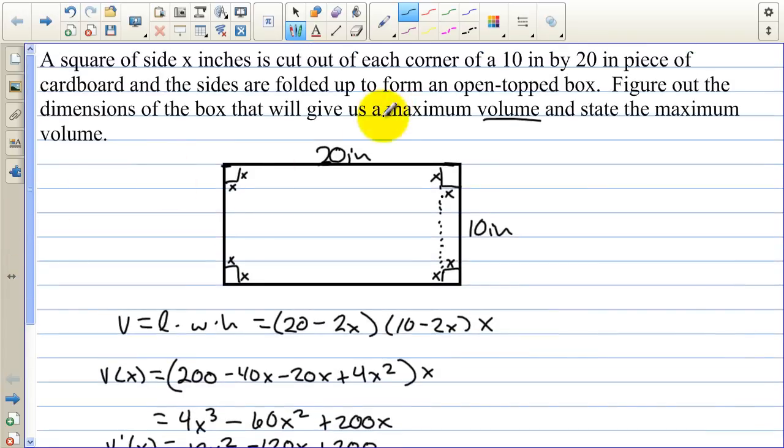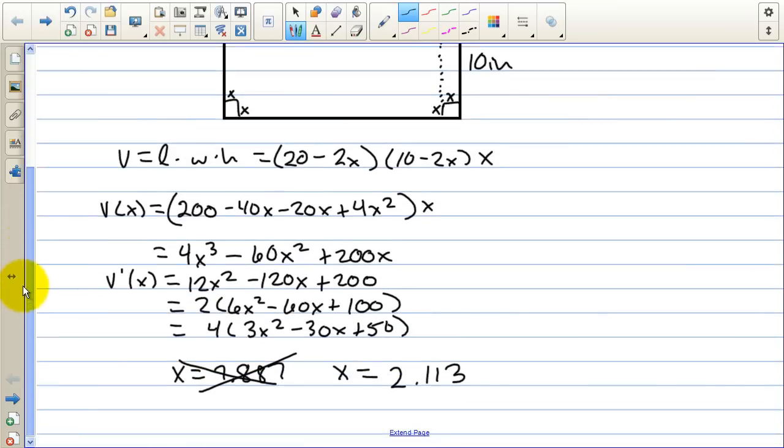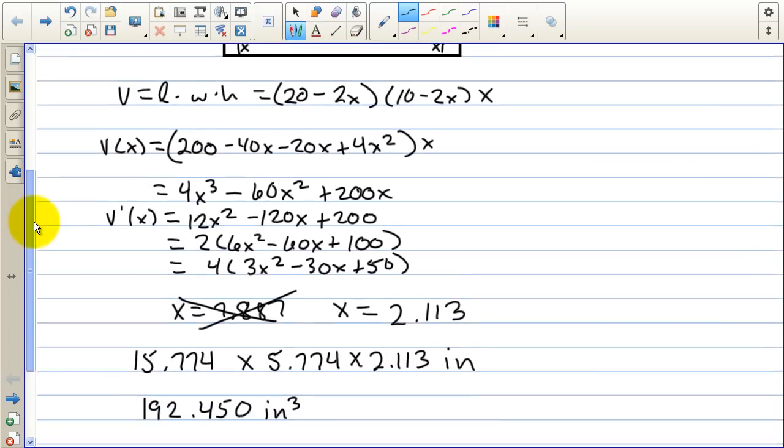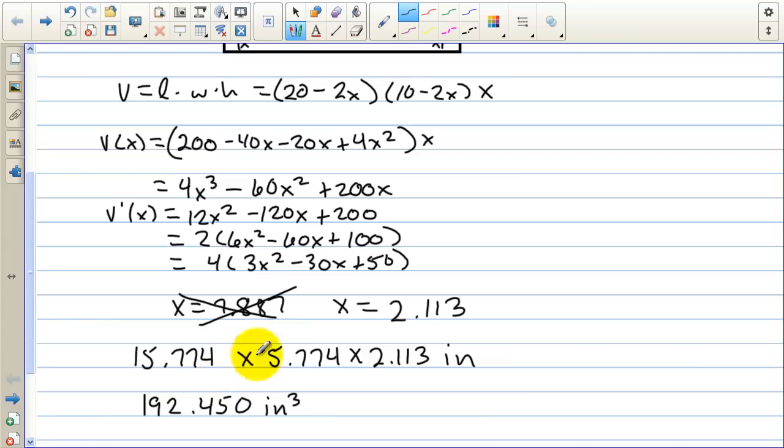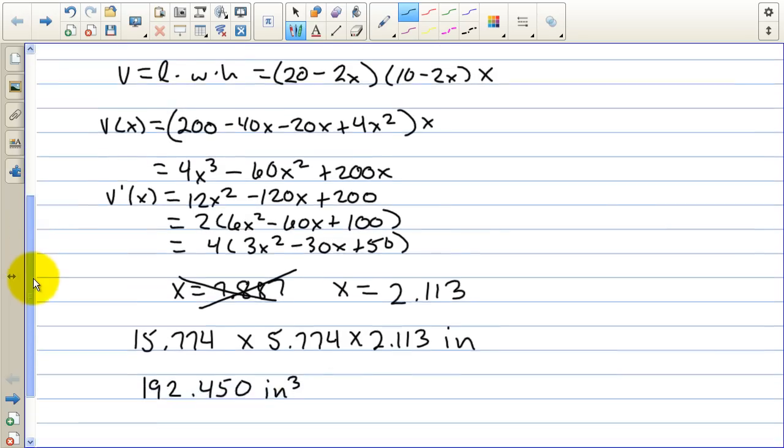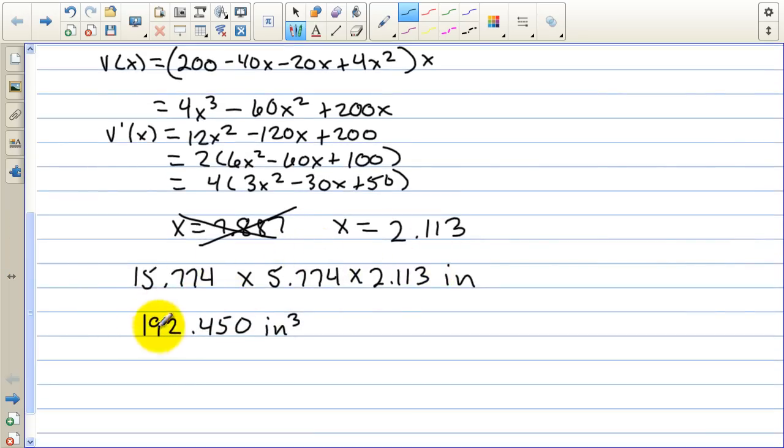So if we look at the question, it says find out the dimensions of the box that will give us a maximum volume. So I need to plug 2.113 in for x's. So I have a calculator here, and I'm going to plug in those values. After plugging in 2.113 in for the x's, we get 15.774 as the length, 5.774 as the width, and 2.113 as the height. And then to find the maximum volume, state the maximum volume, when we multiply these three numbers together, we get 192.450 inches cubed.